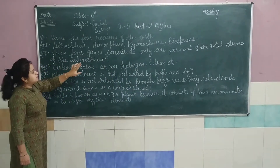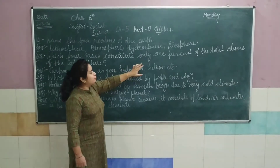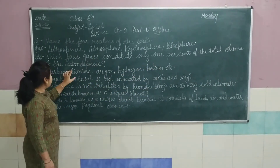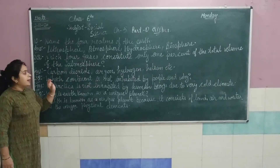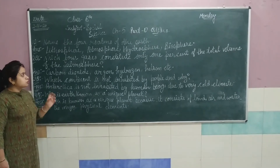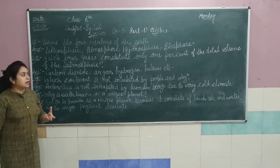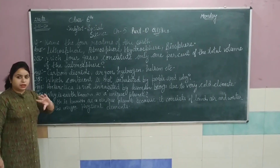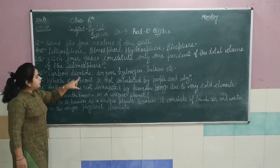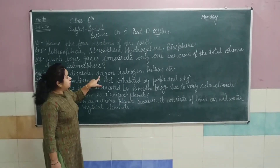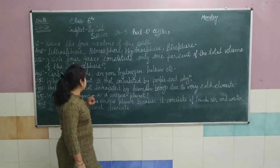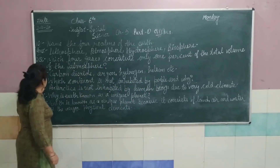Second question: which four gases constitute only 1% of the total volume of the atmosphere? Atmosphere ki jo total volume hai, us mein koon si chaar gases ka sirf 1% hai ikattha mil ke. The answer is: carbon dioxide, argon, hydrogen, and helium.